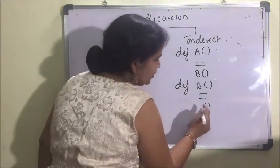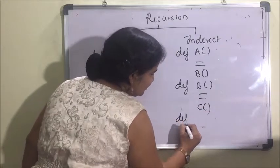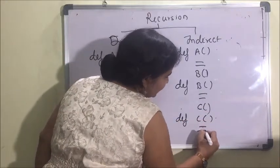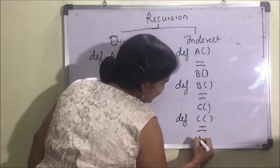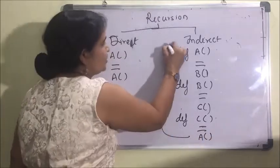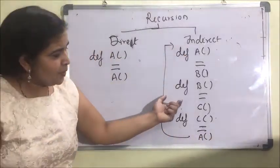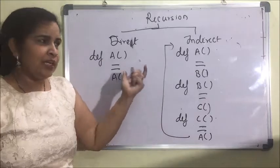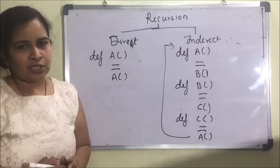It can also be like: suppose I define function c, and c calls a, which in turn calls c — they will keep on calling each other. So this is also indirect recursion.